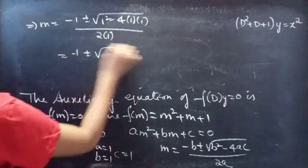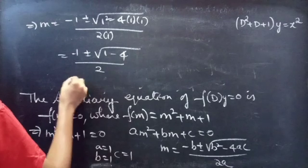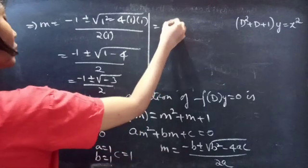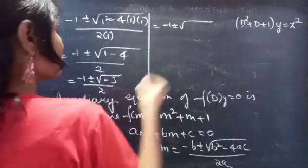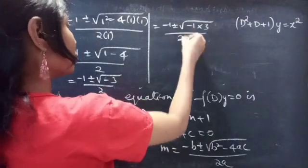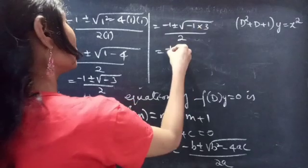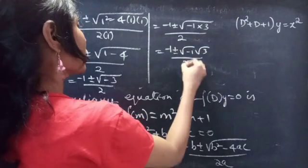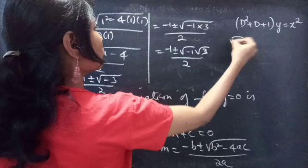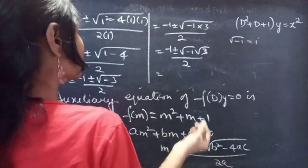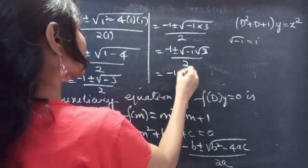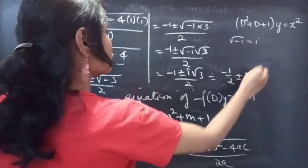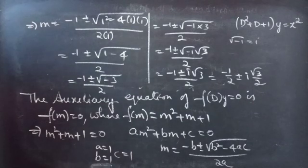This gives m = (−1 ± √(−3)) / 2. Now √(−3) = √(−1 · 3) = √(−1) · √3. We know that √(−1) = i, so replacing √(−1) with i we get m = (−1 ± i√3) / 2, which equals −1/2 ± i·(√3/2). This is a pair of complex conjugate roots.